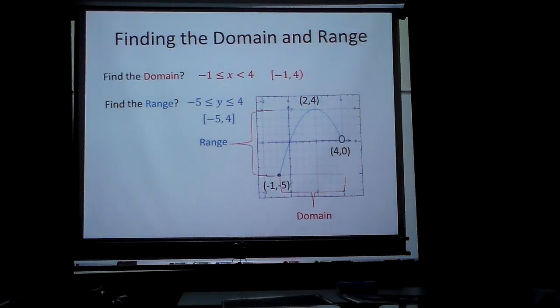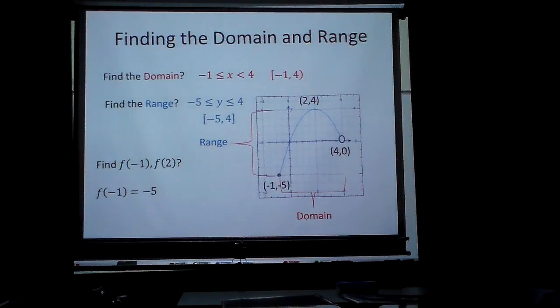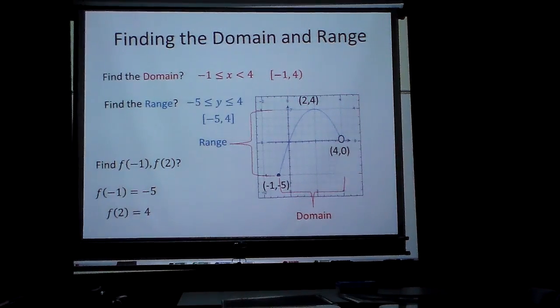If I wanted to find f of negative 1 or f of 2, well, f of negative 1 is simply what? Negative 5, because that's the point when x is negative 1, y is negative 5. And then f of 2, when x is 2, is just what? 4. Alright, thank you.